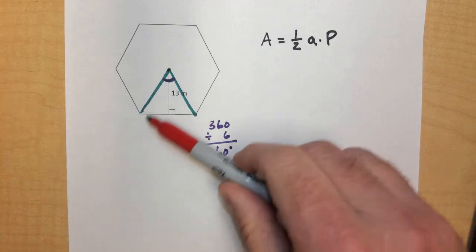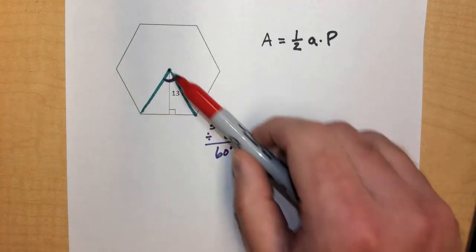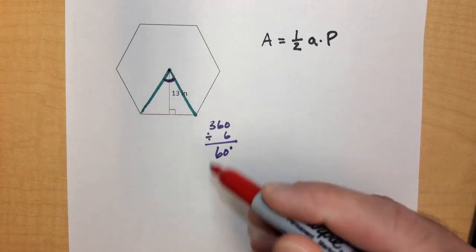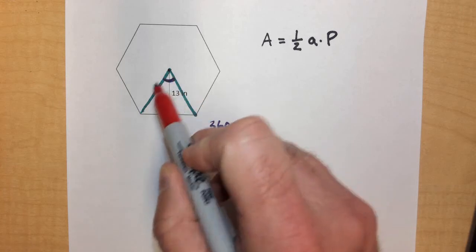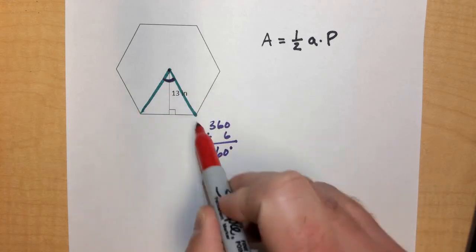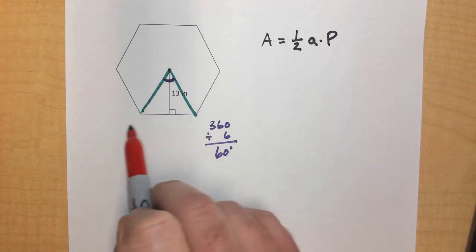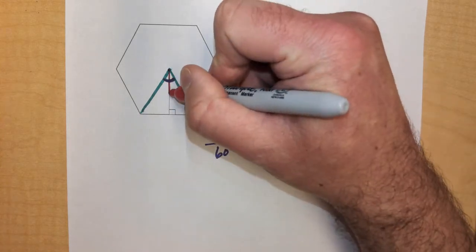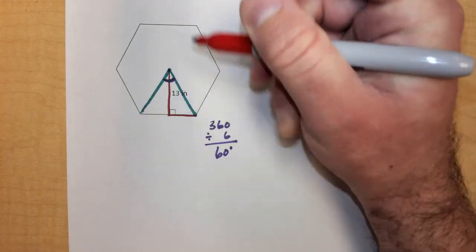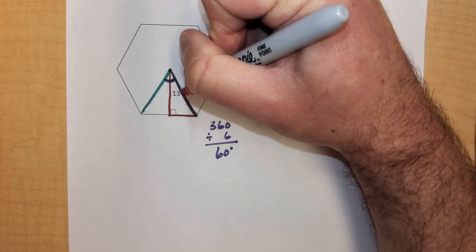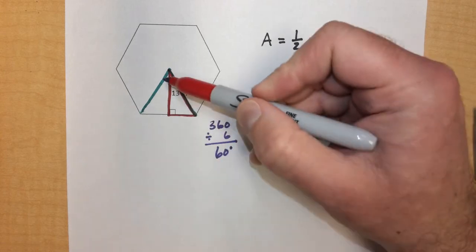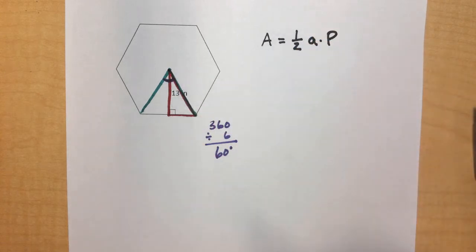Now, we have an equilateral triangle in this case, or an isosceles triangle in other shapes. But we haven't learned anything about the properties of these isosceles triangles in order to solve for a side length. However, we have used right triangles. And in this case, if we look at half of this triangle that we formed earlier, we have a right triangle. This apothem is always going to be perpendicular to the side.